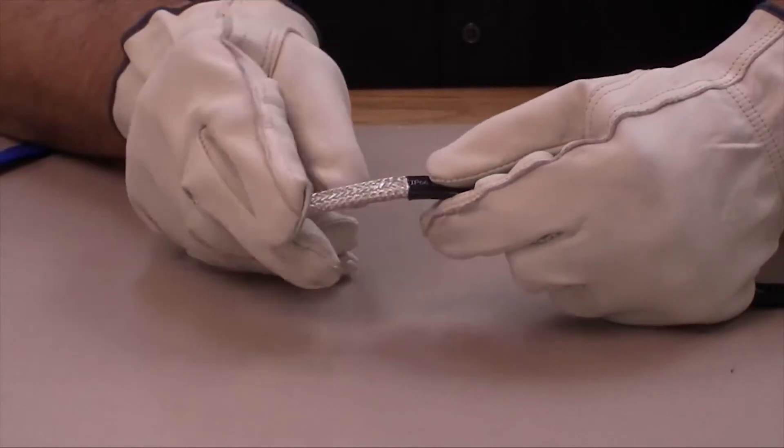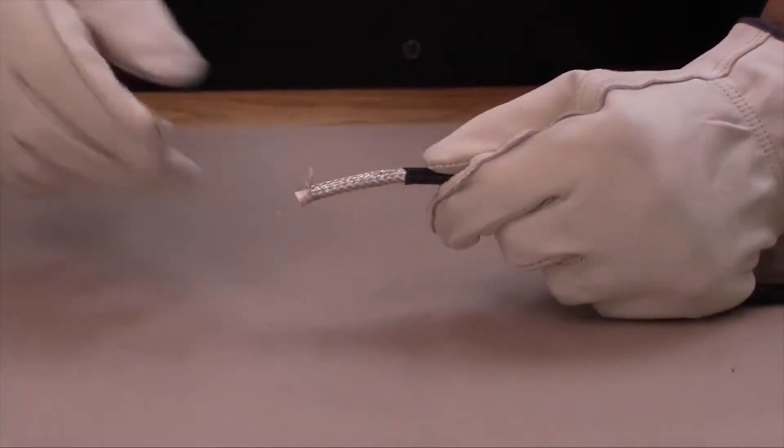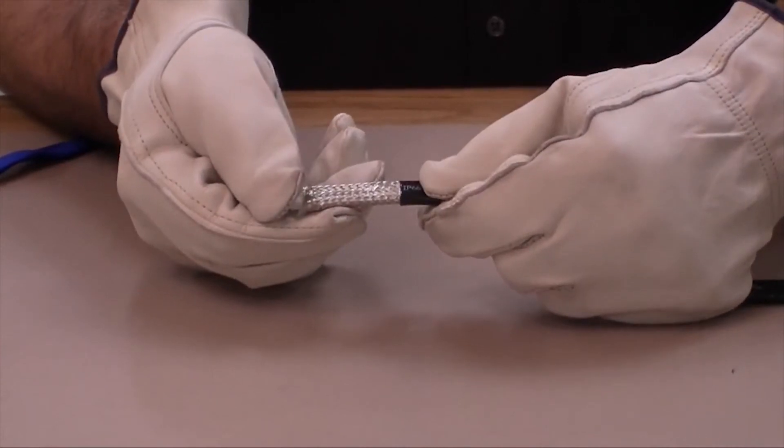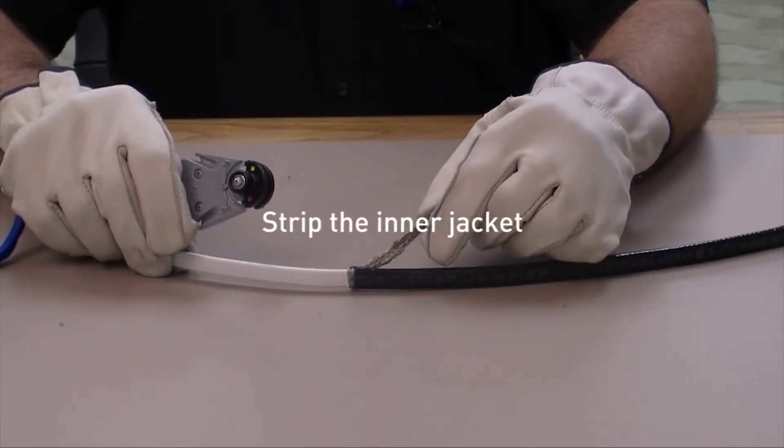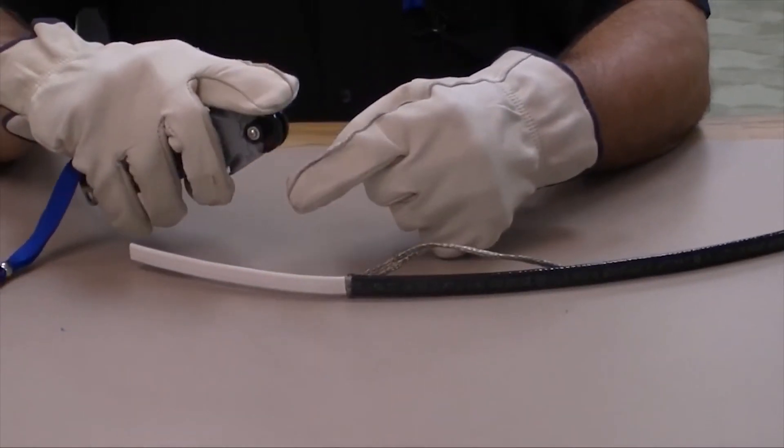To strip the inner jacket, complete the braid preparation steps in the appropriate connection kit insulation instructions. Use the blade marked inner with the red dot to score around the inner jacket of the heating cable.